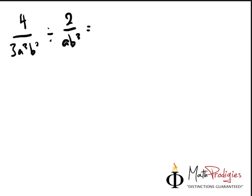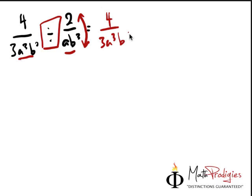Whenever you see something like this, when you see a divide sign and you see two similar-looking terms, what you must do is you must change it to a multiply. So when you change it to a multiply, it becomes inverse. In other words, it becomes one over the other. So instead of 2 over ab cubed, it becomes 4 over 3a cubed b squared times ab cubed over 2. Very simple.